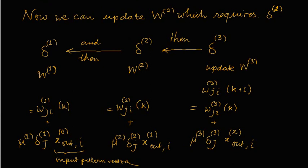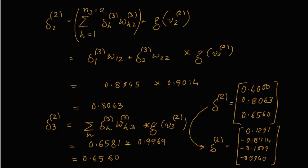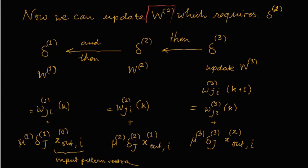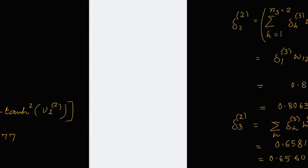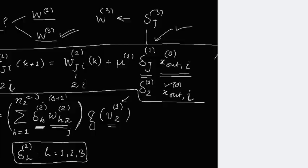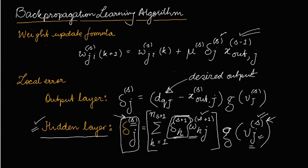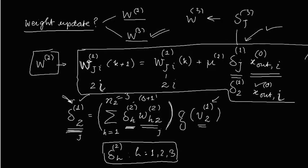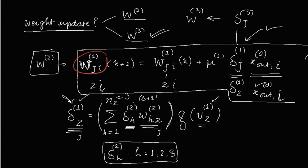Once we get delta 1, the local error at the input layer or the first hidden layer, then only we can evaluate w1 superscript 1. Referring to the expression we introduced at the very beginning, we need delta 1, and for that delta 1 we need delta 2, and so on. Now that we have all these values, we can substitute them along with the previous weights and this will return the updated weight.